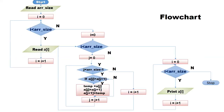Now let us see the flowchart. Start. Read array size. i equal to 0, i less than array size, read a[i], i equal to i plus 1 — this is the reading loop. Then start the bubble sort: i equal to 0 to count the number of passes. i less than array size. j equal to 0 as the array index. If j less than array size minus 1, and if a[j] greater than a[j+1], then temp = a[j], a[j] = a[j+1], a[j+1] = temp. Then j equal to j plus 1. Once this inner loop completes, we have reached the end of the array, and we go to the next pass.